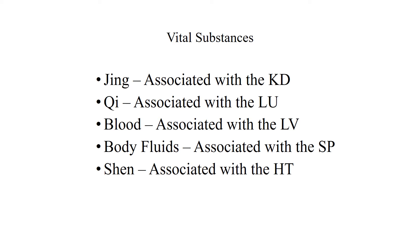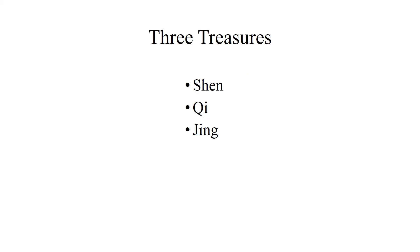Yin is associated with the kidney. Qi is associated with the lung. Blood is associated with the liver. Body fluids are associated with the spleen. Shen is associated with the heart. Jing is also associated with the body. The three treasures are Shen, Chi, and Jing.